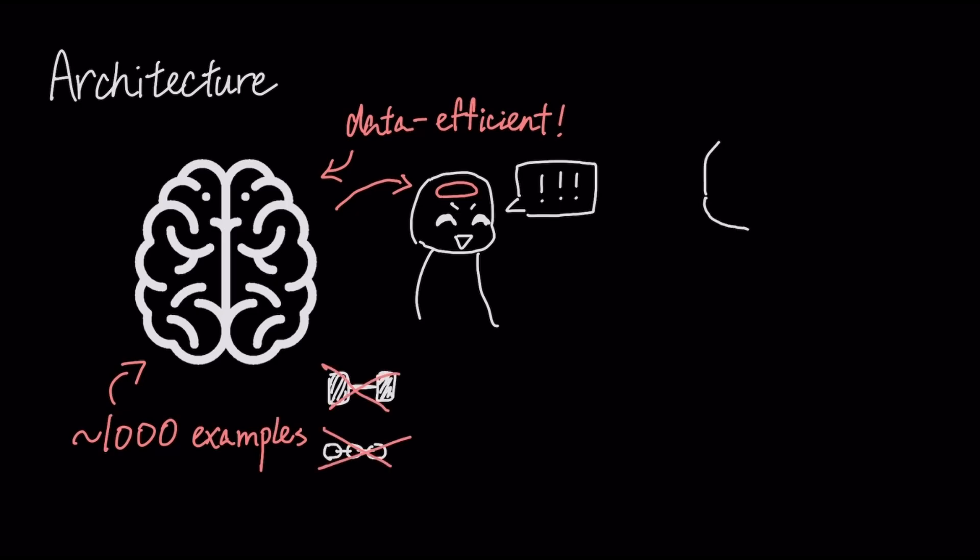To put that in perspective, large transformer models trained on a million examples still failed to achieve even 20% accuracy on the same kind of maze tasks that HRM absolutely crushed.